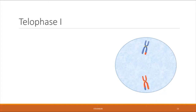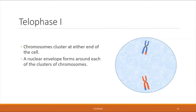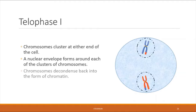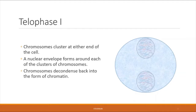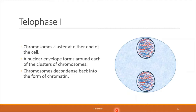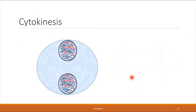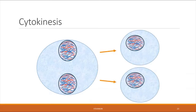In telophase one, the chromosomes cluster at either end of the cell, a new nuclear envelope reforms around each cluster, and they begin to decondense back into chromatin. After telophase, we have one cell with two nuclei, so it's necessary to break that cell into two separate cells — one with each nucleus. That process is cytokinesis, and it represents the end of meiosis one.